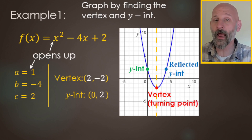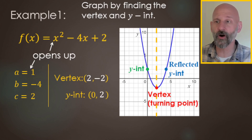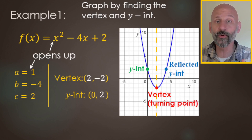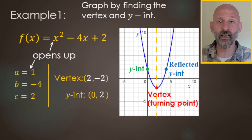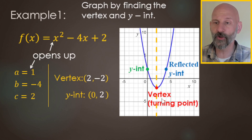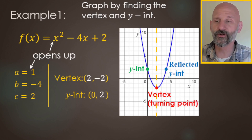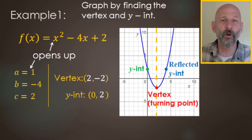If you're doing this by hand, this is the recommended way and it's pretty fast. If you're on a computer, you click on the vertex first and then click on the y-intercept, and it automatically reflects to the other side. That's a shortcut on the computer. By hand, you graph vertex, y-intercept, and reflected y-intercept, then draw your parabola — one of the faster ways of graphing quadratics.